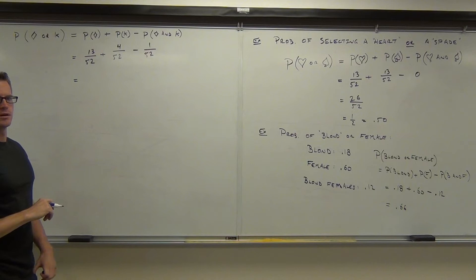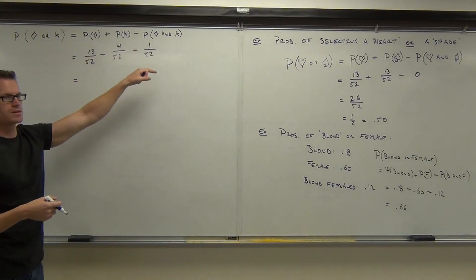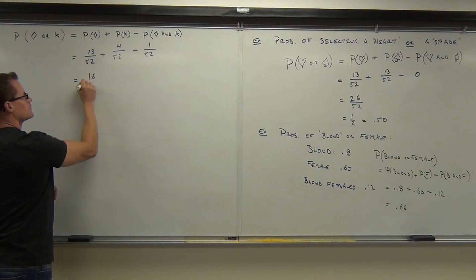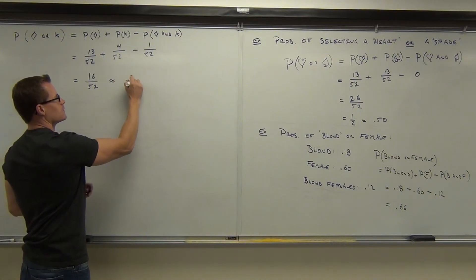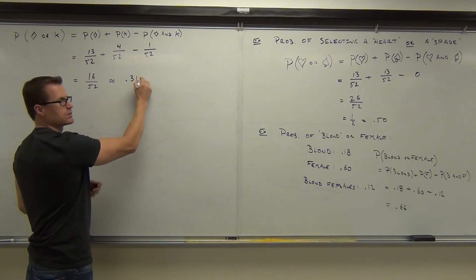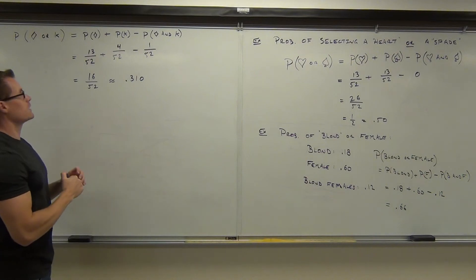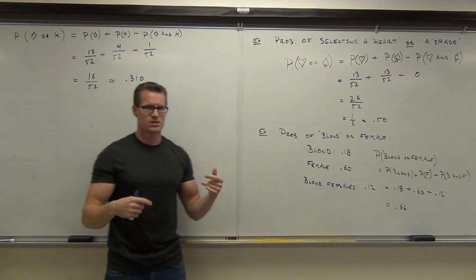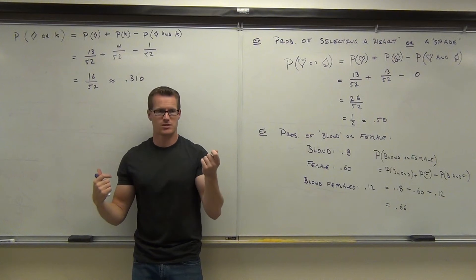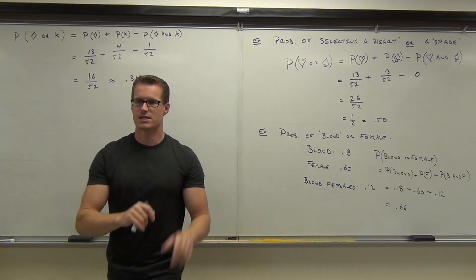So you do thirteen plus four minus one, which gives you sixteen over fifty-two. Or if you want to approximate that as a decimal, it's .310. So about a 31% chance that you're going to select either a diamond or a king. You don't have to pick just a diamond or just a king. You can pick out a two of diamonds — that would work — or the king of diamonds, or the king of spades or hearts or anything else. So any king or any diamond would work here.